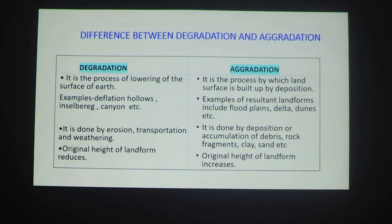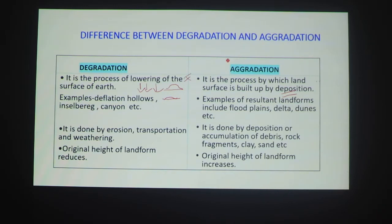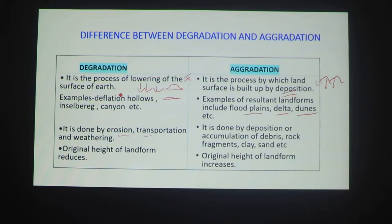Now the difference between degradation and aggradation: Degradation is the process of lowering of the surface of the earth — height decreases. Aggradation is the process by which the surface is built up by deposition — height increases. Examples of degradation landforms include deflation hollows, inselbergs, and canyons, whereas aggradation landforms include flood plains and deltas.